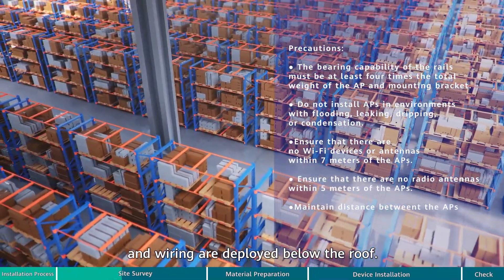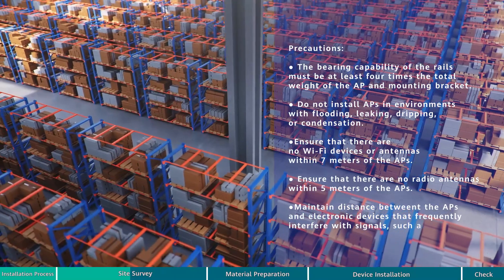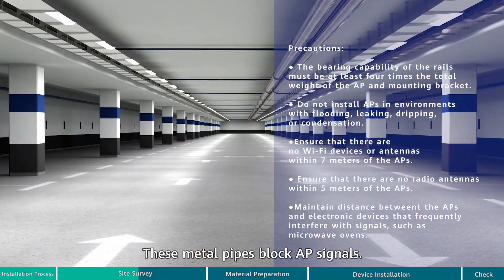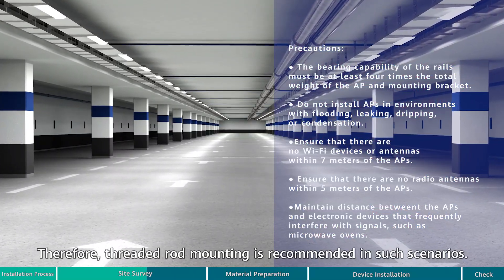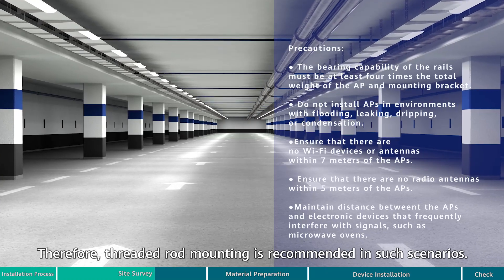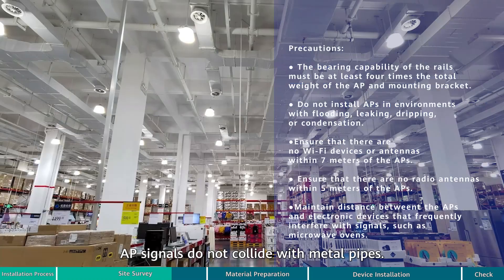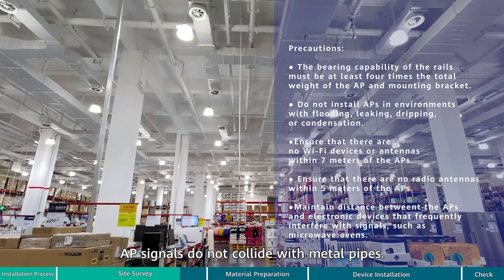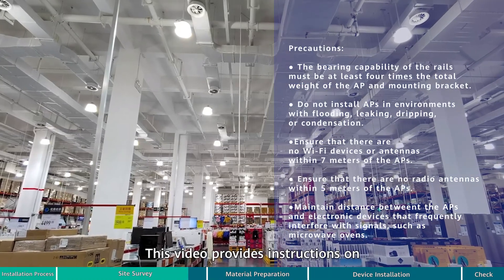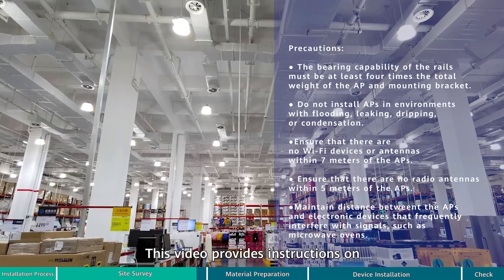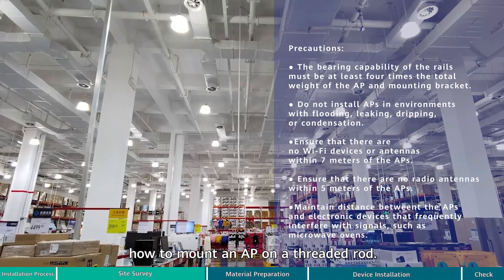Various metal pipes for fire protection, ventilation, and wiring are deployed below the roof. These metal pipes block AP signals. Therefore, threaded rod mounting is recommended in such scenarios. This mounting method will ensure that AP signals do not collide with metal pipes. This video provides instructions on how to mount an AP on a threaded rod.